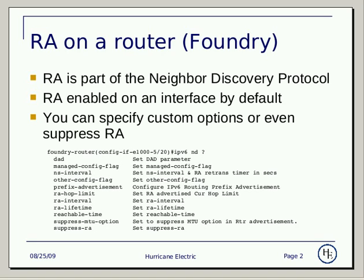RA is part of the Neighbor Discovery Protocol, and by default is enabled on a router's interface. If you need to disable router advertisements or want to specify options, you can do this on the router's interface configuration using IPv6 ND.